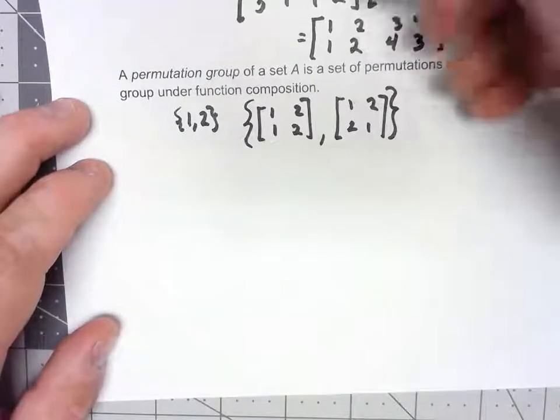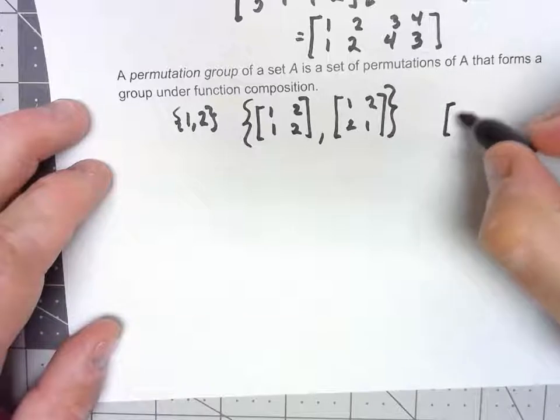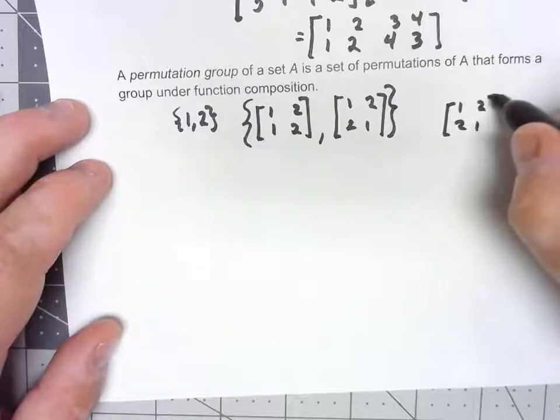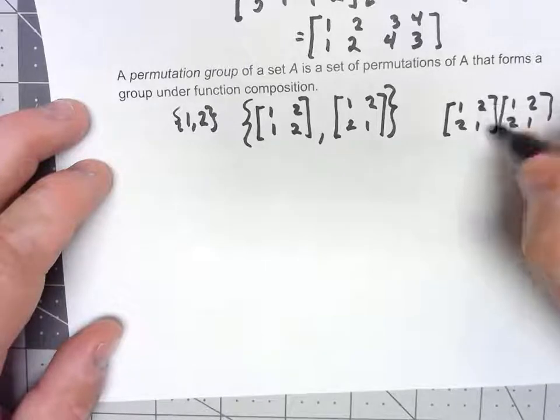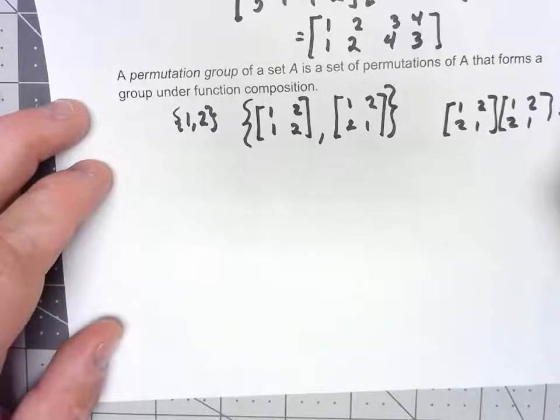This thing would be its own inverse, because if I did [1, 2; 2, 1] times itself, 1 would go to 2, 2 would go to 1, so 1 would go to 1, 2 would go to 1, 1 would go to 2, so 2 would go to 2, so there, it's its own inverse.